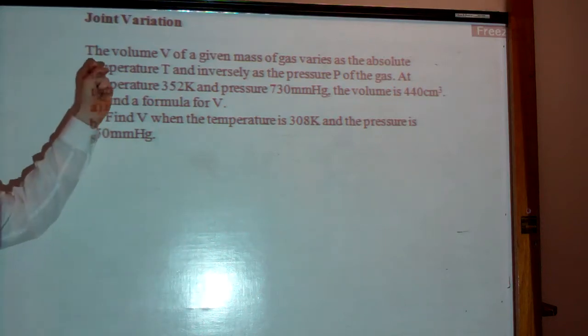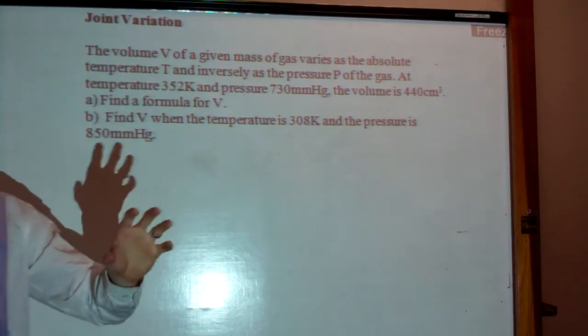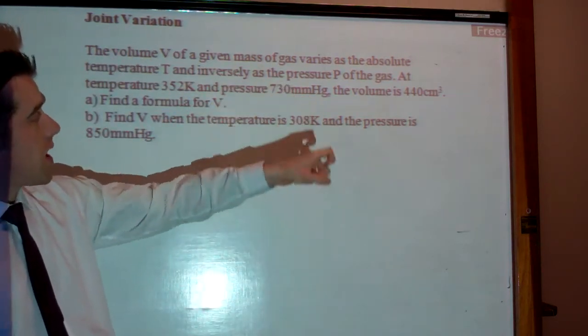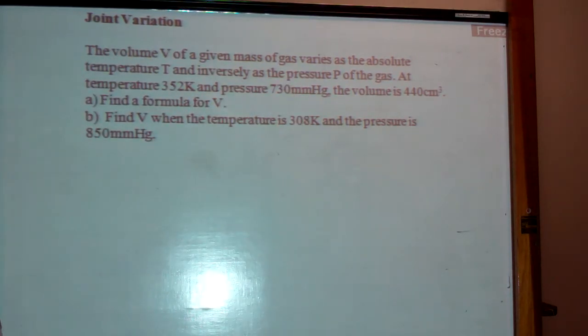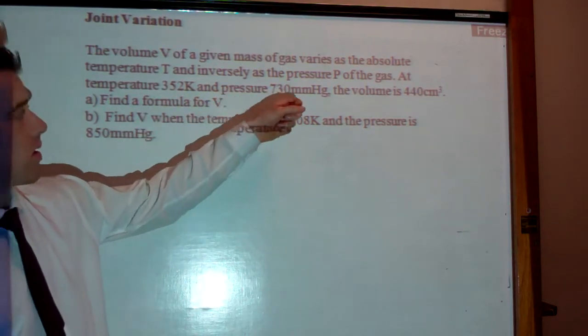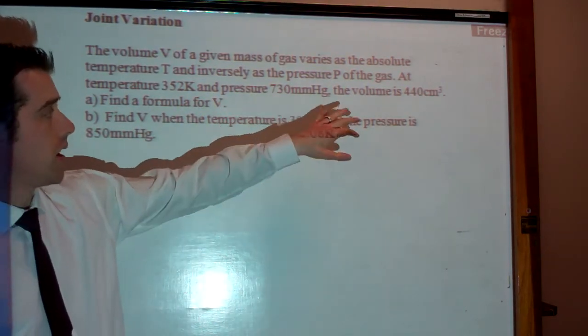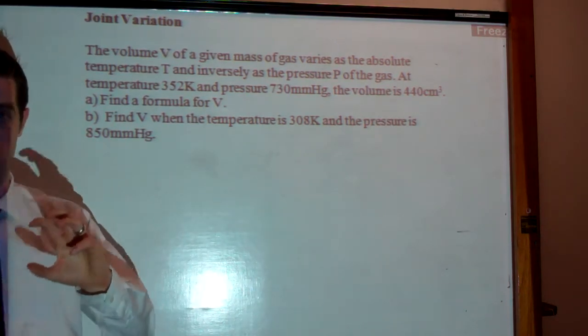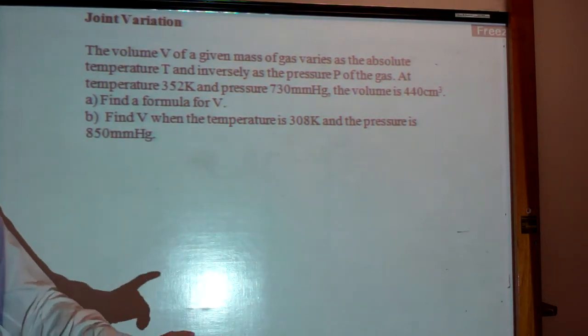Alright guys, so I'll read it out for you, you can pause it and zoom in and copy it if you like. Okay, so we've got the volume V of a given mass of gas varies as the absolute temperature T and inversely as the pressure P of the gas. At temperature 352K, that stands for Kelvin which is a unit of temperature, and pressure 730mm of mercury, the volume is 440cm³. Now that's a lot of units, there's a lot of information, but we're going to break that down.